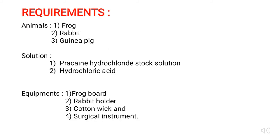The requirements for these experiments are three types of animals: frog, rabbit, and guinea pigs. Then there are different types of solutions — procaine hydrochloride stock solution and hydrochloric acid. The equipment used in these experiments are the frog board, rabbit holder, cotton wick, and surgical instruments for the dissection.